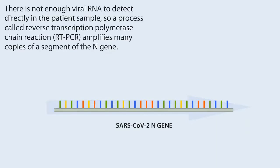There is not enough viral RNA to detect directly in the patient sample, so a process called reverse transcription polymerase chain reaction, RT-PCR, amplifies many copies of a segment of the N-gene.